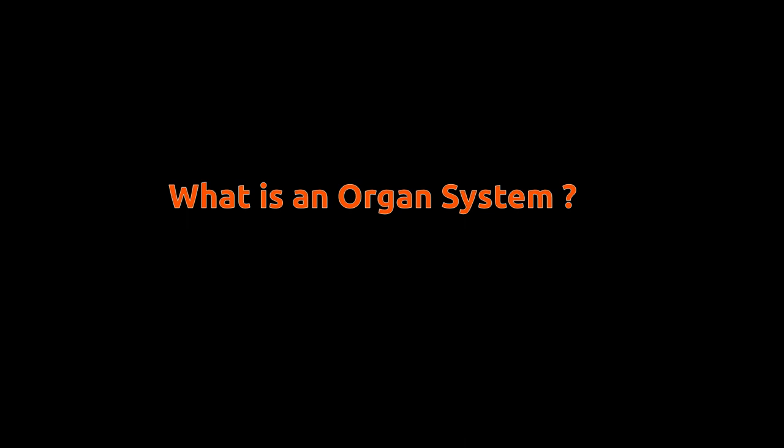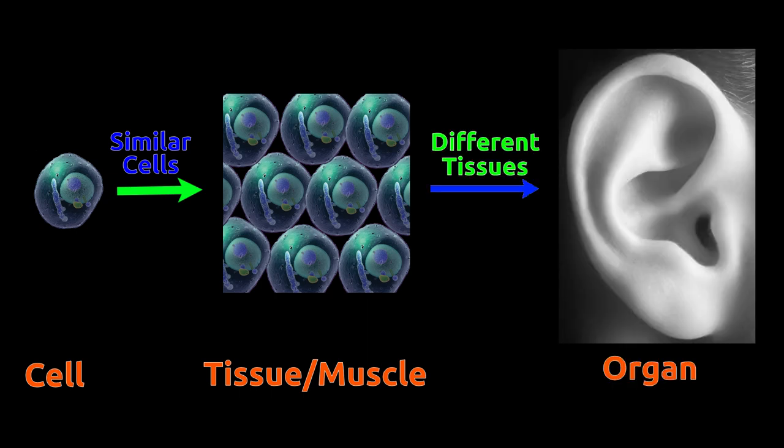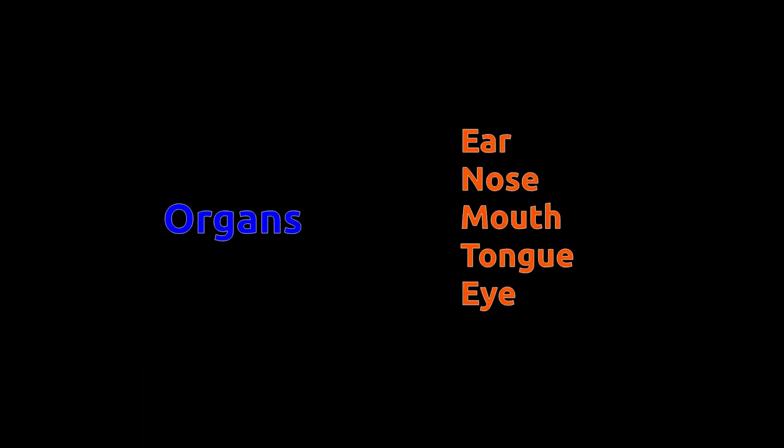What is an organ system? We have seen that cells come together to form muscles and tissues. An organ is formed by a combination of different tissues. Ear, nose, mouth, and eye are some examples of organs.